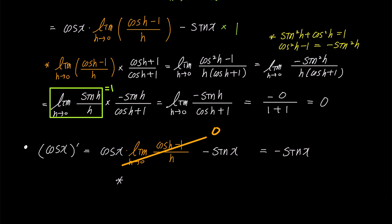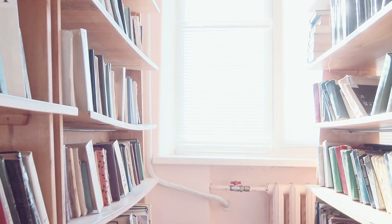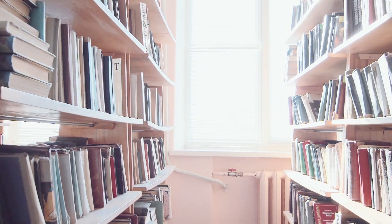Hence, the derivative of cosine x is negative sine x. Today we examined how the derivative of cosine x becomes negative sine x using the limit definition of the derivative.